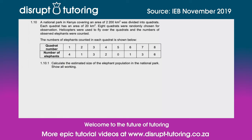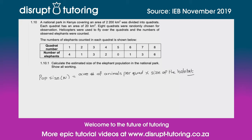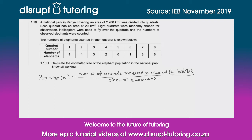To calculate the estimated size of the population we use the formula: population size (n) is equal to the average number of animals per quadrat multiplied by the size of the habitat, divided by the size of the quadrat. So the first thing we need to do is work out the average number of animals per quadrat — the average number of elephants.